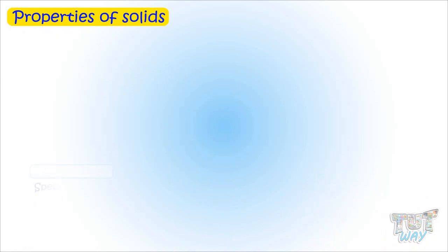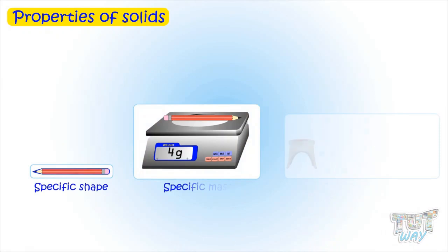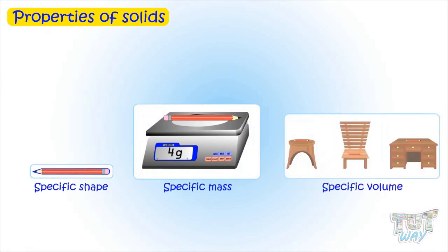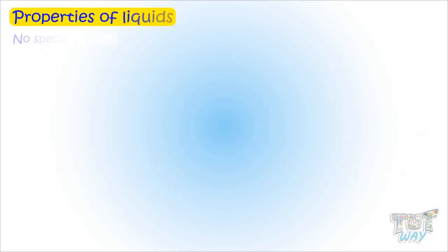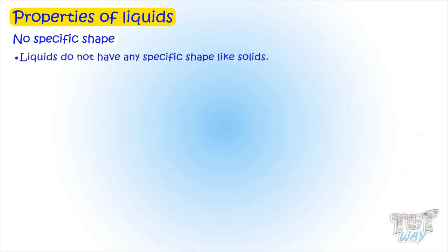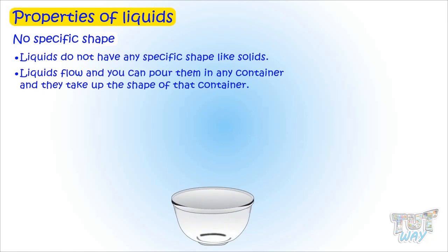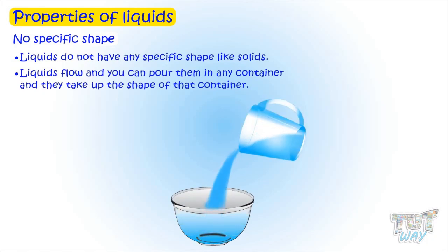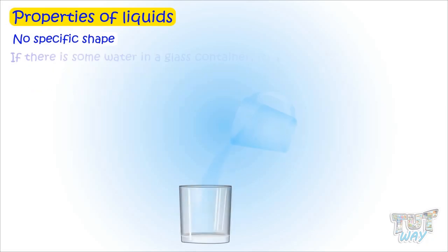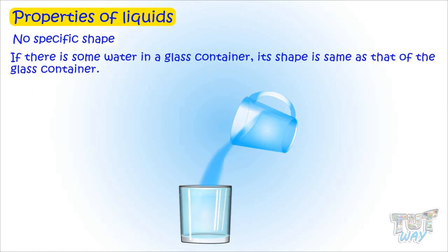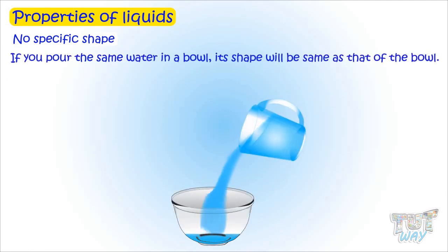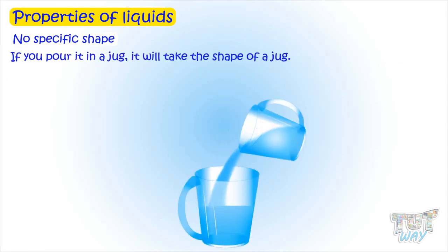Solids have specific shape, mass, and volume. Now let's learn properties of liquids. Liquids do not have a specific shape like solids — they flow and you can pour them into any container and they take up the shape of that container. If there is water in a glass container, its shape is the same as the glass. If you pour the same water in a bowl, it takes the shape of the bowl.